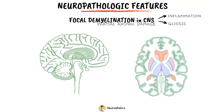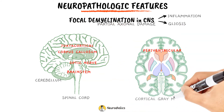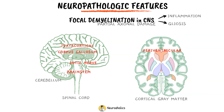These lesions tend to be located in the optic nerves, spinal cord, brainstem, cerebellum, and the juxtacortical and paraventricular white matter. In addition, demyelinated lesions can also be found in the corpus callosum and cortical gray matter. Axonal injury can be a prominent pathologic feature of the MS plaque.